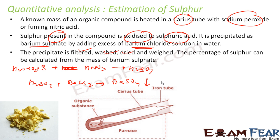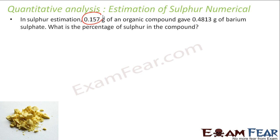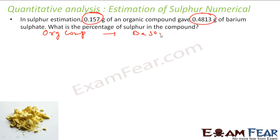The barium sulfate precipitates out, you filter it, dry it, and from this you can find the composition of sulfur. Let's take one example: in the sulfur estimation, a given gram of organic compound gives a certain gram of barium sulfate. The molar mass of barium sulfate is: barium is 137, sulfur is 32, oxygen is 16 × 4 = 64, giving a total molecular mass of 233.